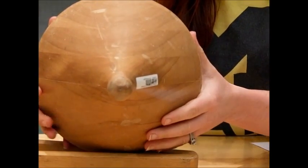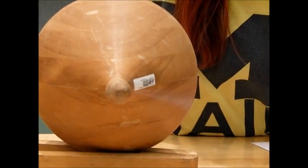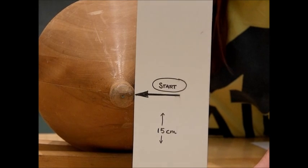If we place our cone at the skinny end of the track and measure the height of the center of mass from the surface of the table, you will see that is about 15 centimeters from the surface.